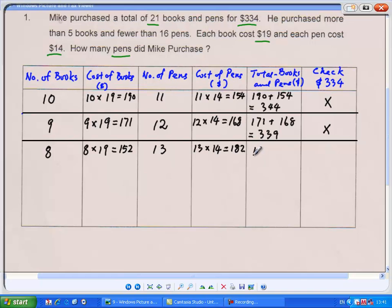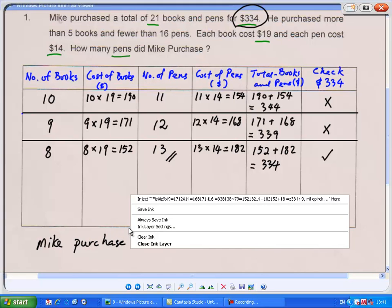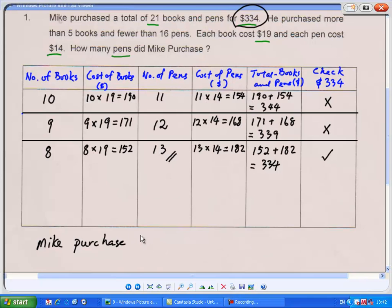And the total cost, $152 plus $182, that would give us $334, which is the correct guess because the cost is exactly $334. So our answer, how many pens did Mike purchase? He purchased 13 pens. Mike purchased 13 pens.